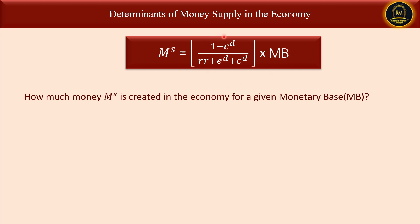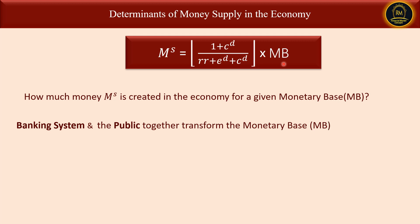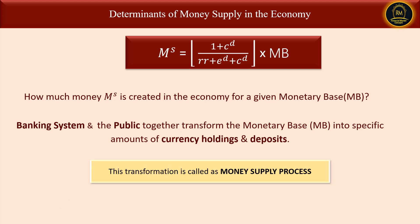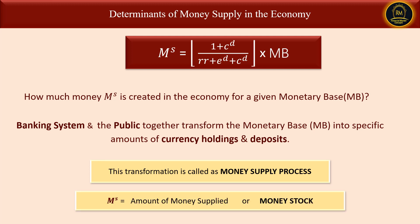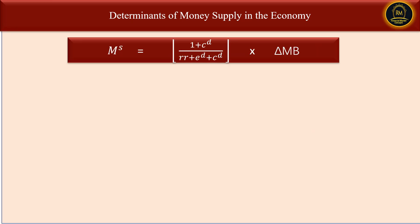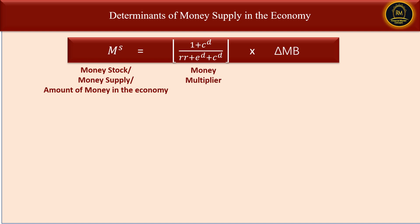To answer this question, we have to find out the value of the money multiplier, which comprises the required reserve ratio, the desired excess reserve ratio by the commercial banks, and the desired currency to deposit ratio by the public. The banking system and the public together transform the monetary base into a specific amount of currency holdings and deposits. This transformation is called the money supply process, and the resulting amount is called the money stock or money supply in the economy.